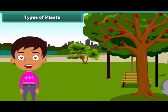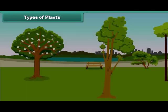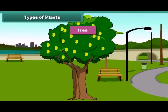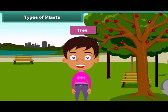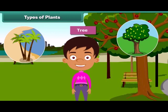Children, we often see different types of plants around us. We find that some plants are tall while some are small. Plants which are very tall and strong are called trees. For example, mango tree, coconut tree and neem are tall.